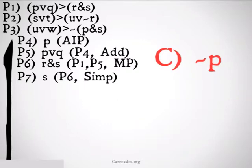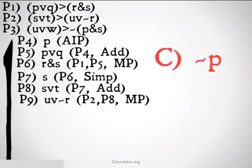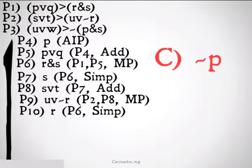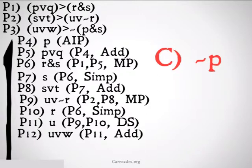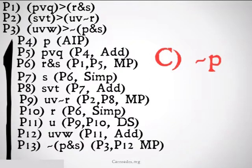R and S can be simplified down to just S — premise 6 simplification. We want S so we can do S or T by addition — premise 7 addition. That will let us conclude U or not R from 2, 8 modus ponens. We were already able to get R from R and S — premise 6 simplification. That allows us to conclude U from premise 9 and premise 10 by disjunctive syllogism. U can be joined with W to get U or W — premise 11 addition — and then conclude it's not the case that P and S from premise 3, 12 modus ponens.